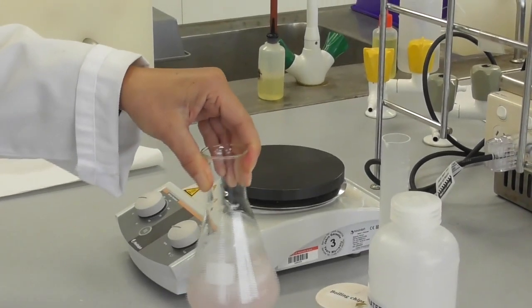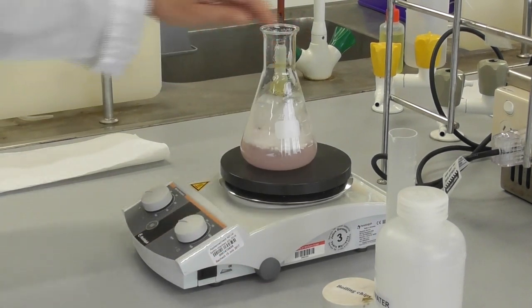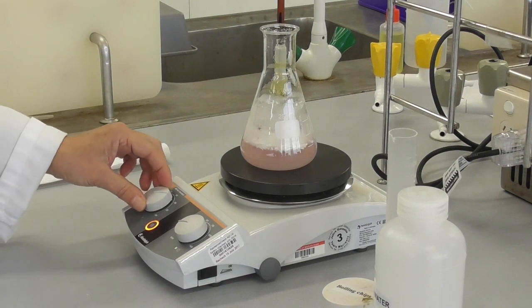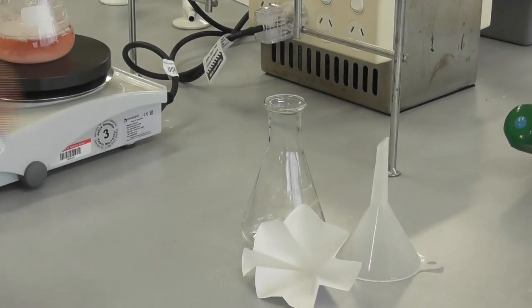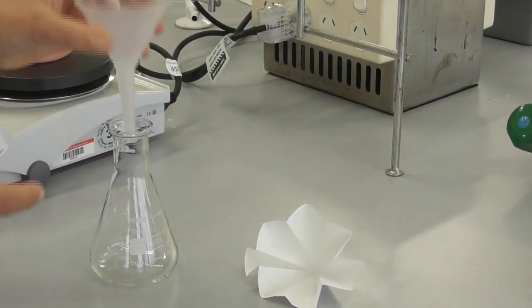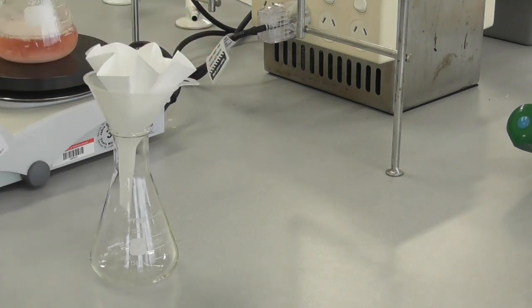We swirl the mixture and then put it on a hot plate to heat it up to near boiling. While the solution is heating up we can set up the gravity filtration with another conical flask, a funnel and a fluted filter paper.